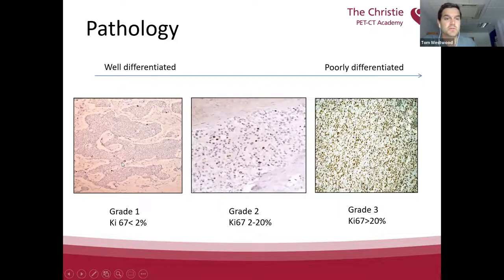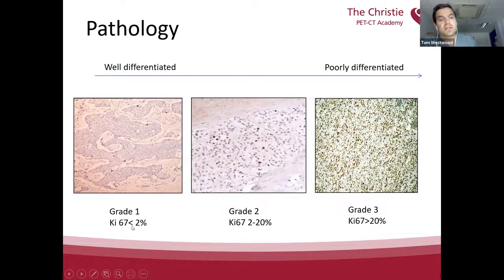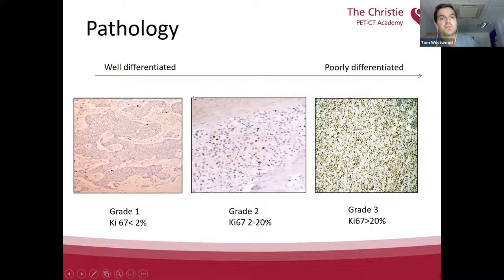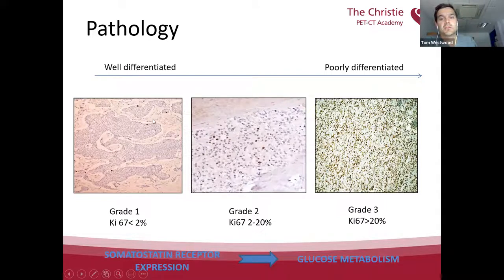The histopathologist literally counts dark dots and judges how many there are per high power field. A KI-67 index of less than 2% classifies a grade 1 or well-differentiated tumour. A KI-67 index of 2–20% is grade 2, a moderately differentiated tumour. Grade 3, a poorly differentiated tumour, has a KI-67 index over 20%. That's how we make sense of tumour behaviour on biopsy, and it's very important for imaging because it also allows us to make an appropriate choice of imaging technique.